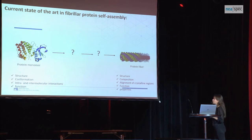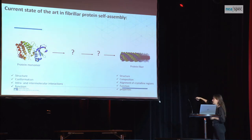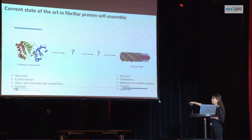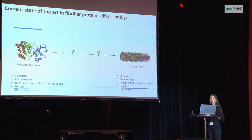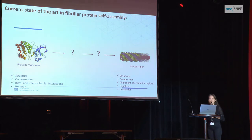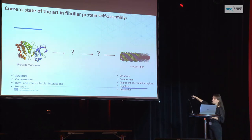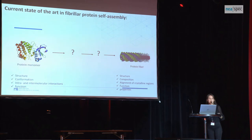What is the state of the art in protein fibrillation phenomena? We have gathered a lot of knowledge about the structure, conformation, inter- and intramolecular interactions, and function of the monomeric protein unit, and we can now identify the structure, composition, function, and physical characteristics of the final construct. But what happens in the middle remains a mystery. Our research asks: what are the key molecular events in this self-assembly process, and what happens when we introduce changes to these key molecular events?